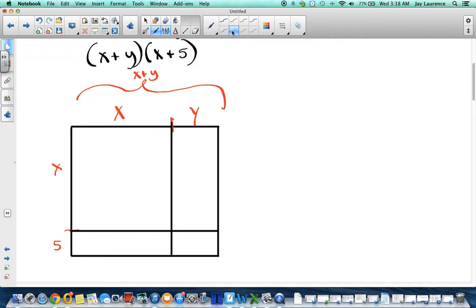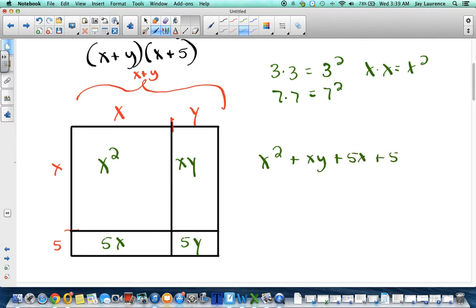Now, all I'm going to do is find the area of each piece of the rectangle, each square or rectangle inside. And then I'll be able to add them together. So, what's the area of this one? Well, x times x is x squared. Right? Because 3 times 3 is 3 squared, or 3 to the second power. Or 7 times 7 is 7 squared. So, x times x is x squared. Okay. This piece right here, x times y, xy. This one here, 5 times x is 5x. And this one here is 5y. Now, that I have all the areas of those smaller squares and rectangles, I just add them together. x squared plus xy plus 5x plus 5y. And there you go.